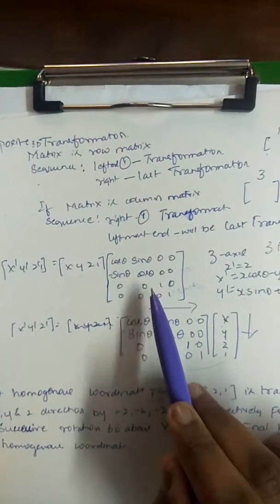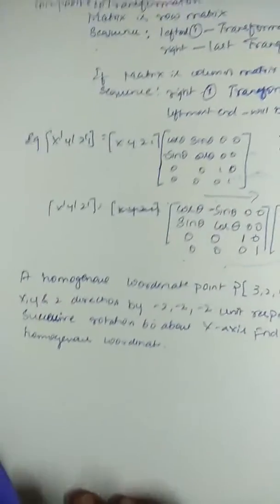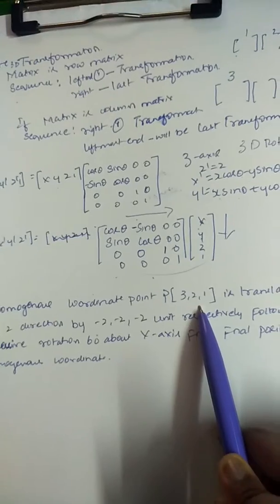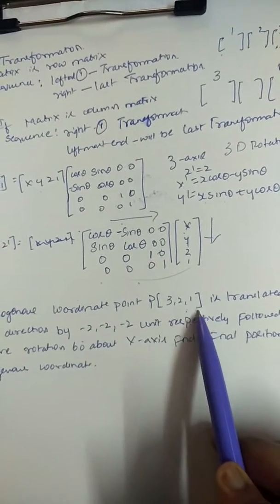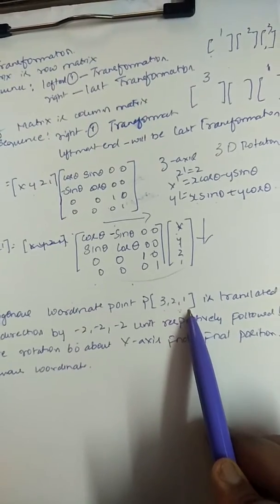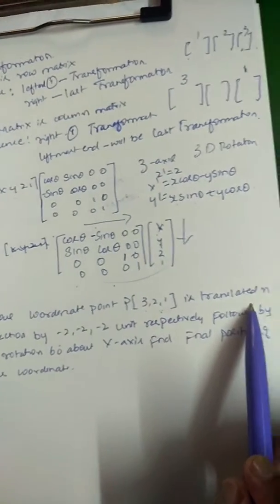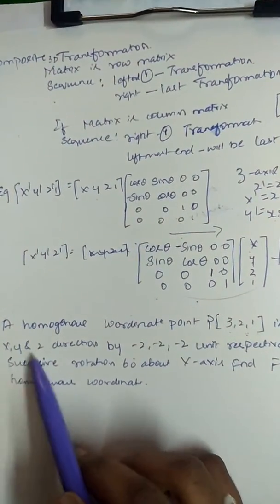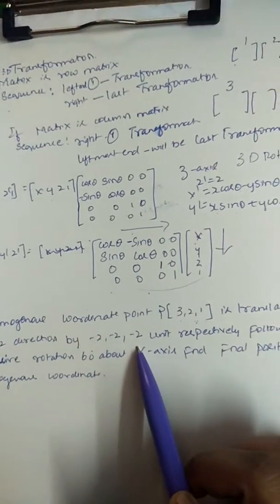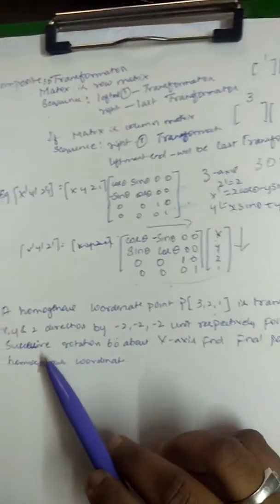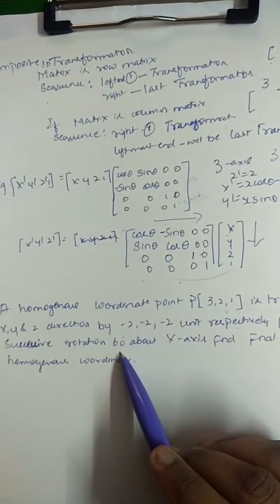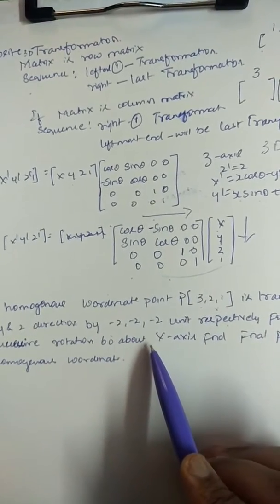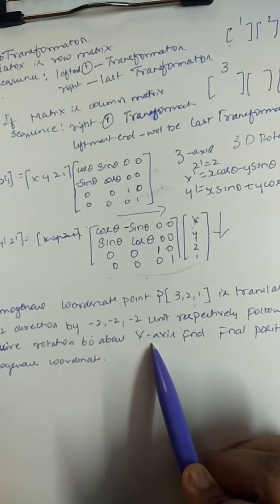Now consider this problem using a row matrix. In homogeneous coordinates, we have a point P with coordinates (3, 2, 1) — that is X=3, Y=2, Z=1. It is translated in all XYZ directions by minus 2, minus 2, minus 2 units respectively, followed by a successive rotation of 60 degrees about the X-axis. We need to find the final position of the homogeneous coordinate.